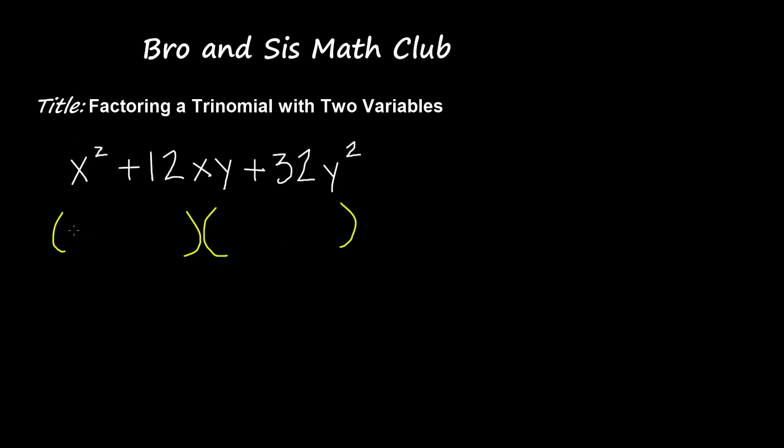So I'm going to go ahead and put x and x in these parentheses because we know that when we multiply x times x, we get x squared.